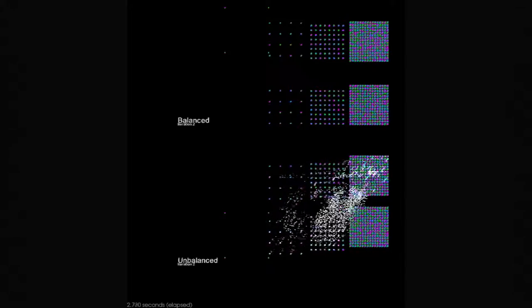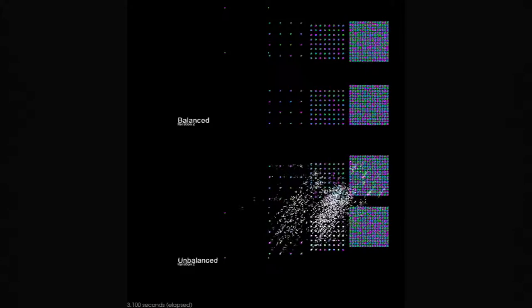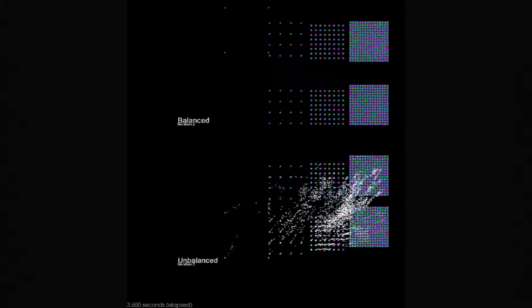This visualization compares the balanced execution against the imbalanced execution. As the load balancing reduces the number of remote messages, the iterations of the balanced execution shown at the top finish much earlier than the imbalanced iterations shown below.